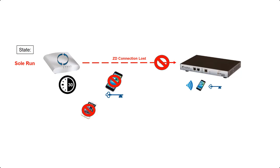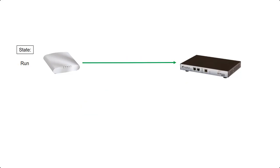When the Zone Director was first designed, the access points and Zone Director were designed to operate within the same network - it was never designed for access points to be deployed over WANs. However, with the improvement of WAN connections, that's exactly what some customers did. This introduced a problem because latency over WAN links and sometimes disconnection meant that access points lost connectivity with the Zone Director. A solution was found with the use of autonomous WLANs.